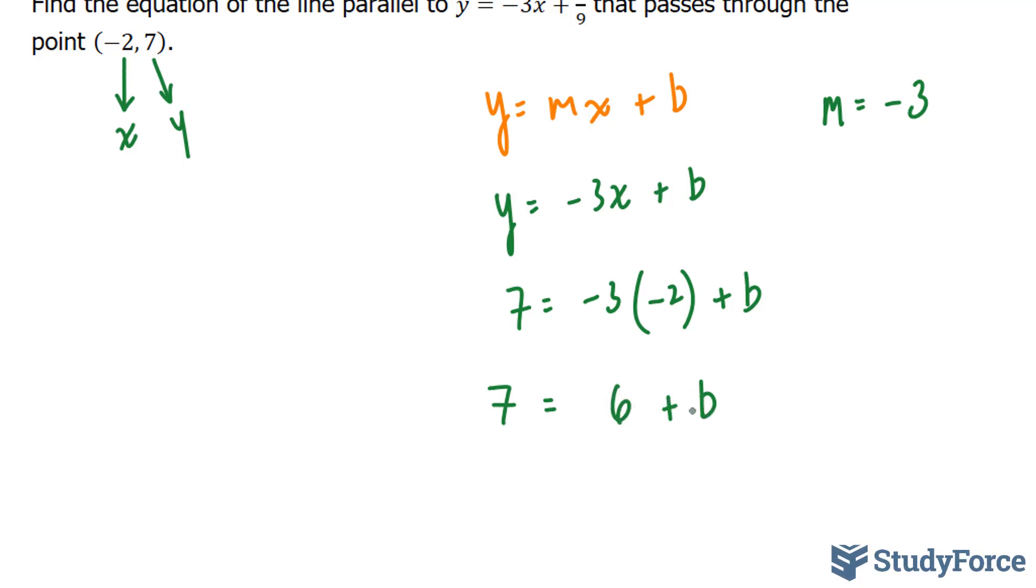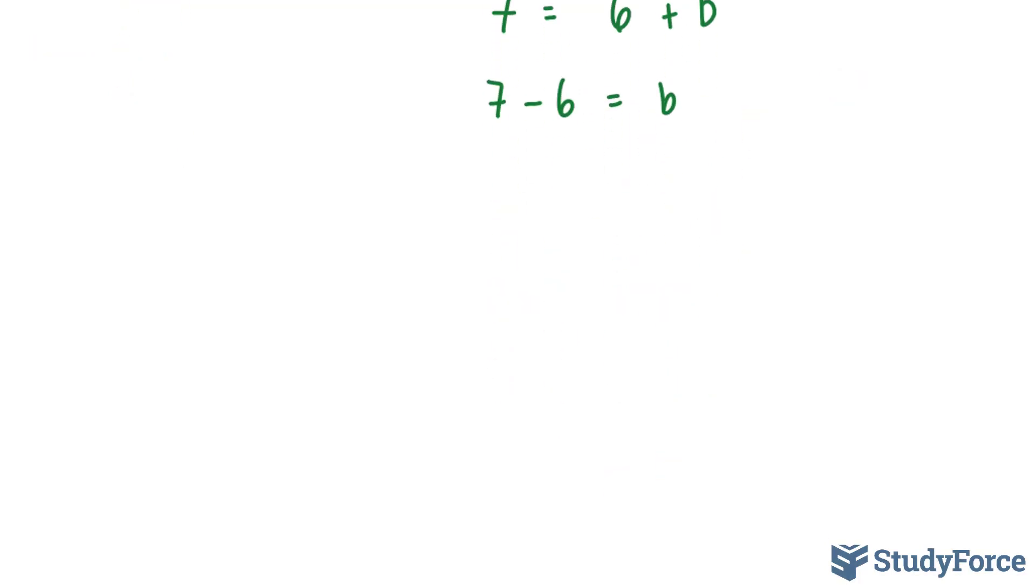6 plus b doesn't give you anything, so you'll have to rearrange the right side. You bring the 6, which is currently positive, over to the left side. 7 minus 6 equals b. On the left side, 7 minus 6 equals 1. So 1 equals b.